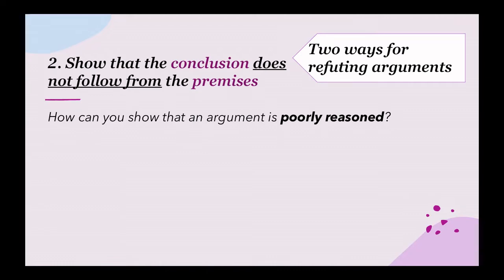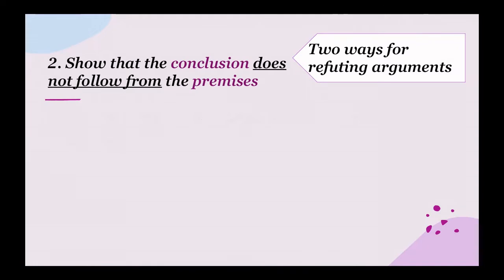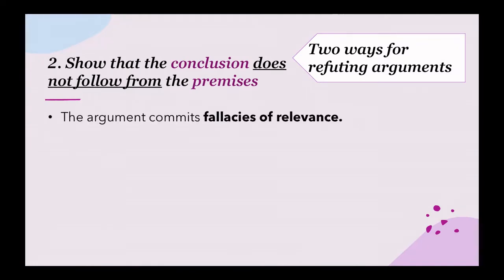In the first method, we focus on the premises, but in the second method here, we focus on the relationship between the conclusion and the premises. So, to show that the conclusion does not follow from the premises, we can show that the conclusion and the premises are not logically relevant — they are not relevant to each other.